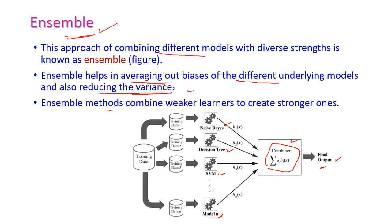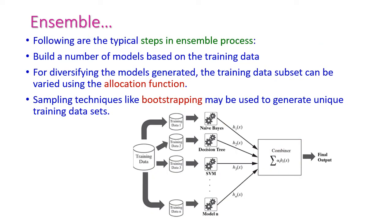The steps in an ensemble process are as follows. First, select the number of models based on the size of the training data. Second, allocate training data to all models using an allocation function. By using the allocation function, we decide how much data should be allocated for training each model.